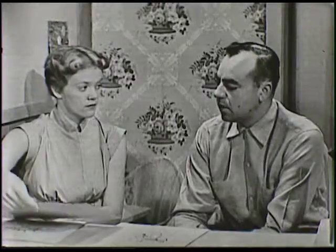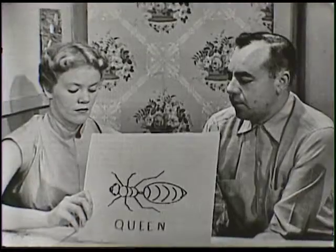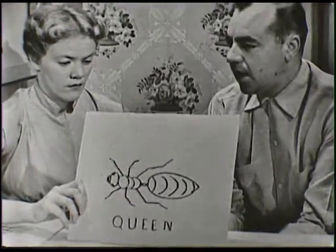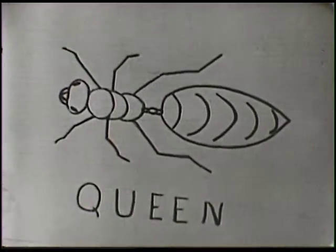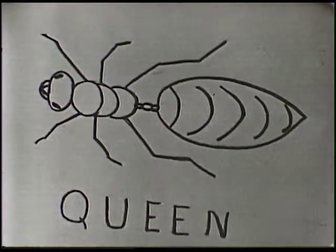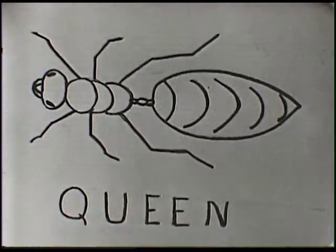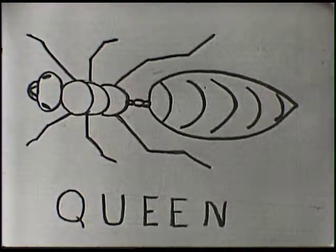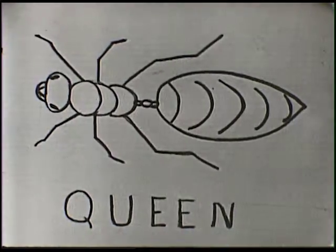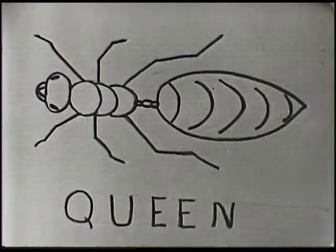We have some drawings here of some of these different castes in the ant world. The first one, of course, is the queen. You remember that the termites had a winged sexual form — the males and females got wings and flew out. Well, so do the ants have wings, and then after the two have mated, the queens go back to their colonies and break off their wings. They don't need the wings anymore — in fact, they'd be in the way in the tunnel. This is a picture of a queen after she has gone back to her colony.